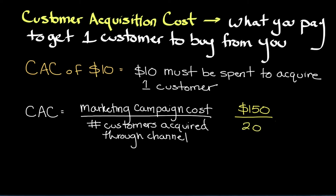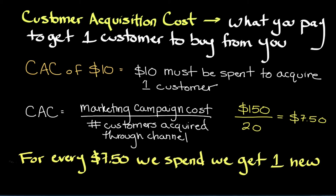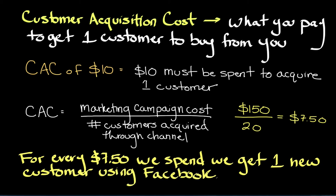After combing through our analytics, let's say we determine that 20 people converted. If we divide $150 by 20 people, we get $7.50. This means that for every $7.50 that we spend, we get one customer using Facebook. Now, you might be asking yourself if $7.50 represents a strong method of acquiring customers. Truthfully, it depends upon your other channels.